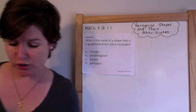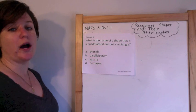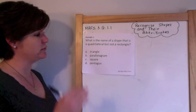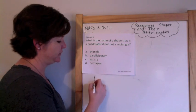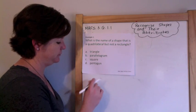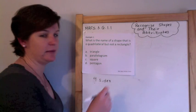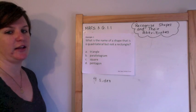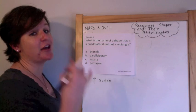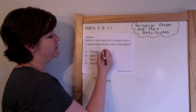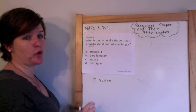So this very first question says, what is the name of a shape that is a quadrilateral but not a rectangle? A quadrilateral has four sides, so it needs to have four sides, but it cannot be a rectangle. A triangle has three sides and therefore is not a quadrilateral because a quadrilateral needs to have four sides. Quad means four.